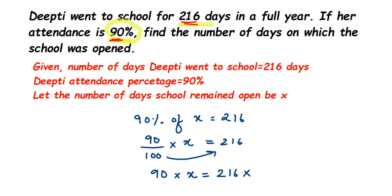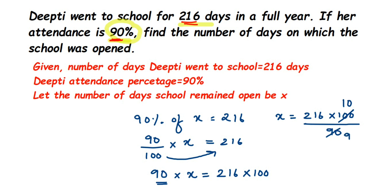We have to get the value of x. Transpose 90 and 100 to the other side: 100 is in division, so when transposed it comes to the numerator, giving 90 times x equals 216 times 100. Now transpose 90 — it's in multiplication, so it comes to division — giving x equals 216 multiplied by 100 divided by 90. Cancel 100 and 90 by 10: 10 and 9 remain. Then cancel 9 and 216: 9 goes into 216 giving 24. So x equals 24 times 10, which is 240.